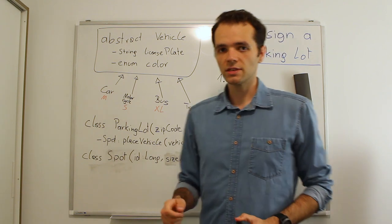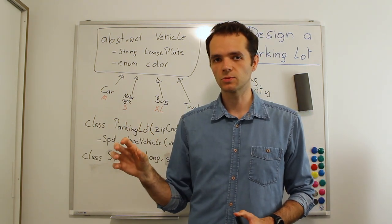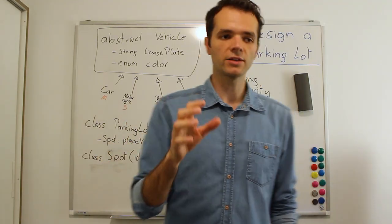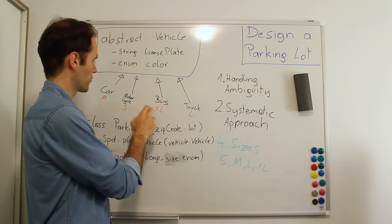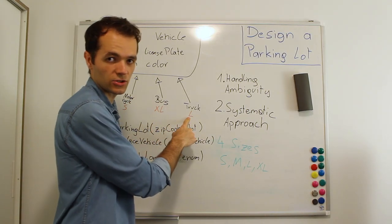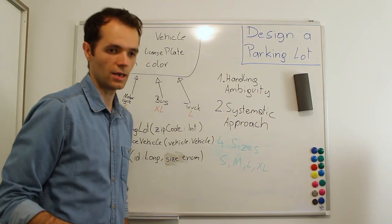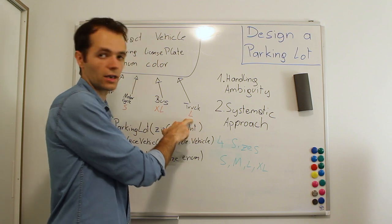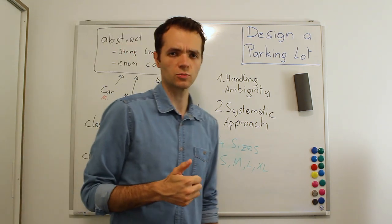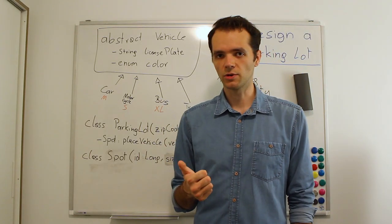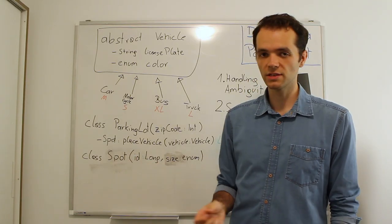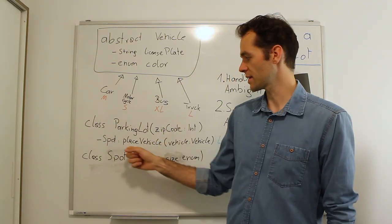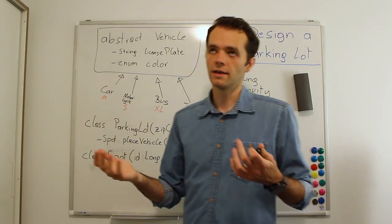We put in a vehicle and have to store it in some kind of data structure. This is mostly the point of algorithmic interview questions — choosing the right data structure. Place vehicle will have to find the first available spot suitable for the kind of car we're getting. One option is an array or list of spots, but that means running through each element to check if it's free — a linear operation — which is probably not great.